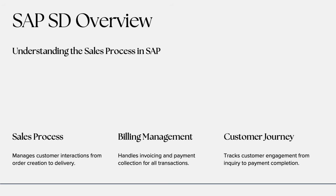Let's start with the basics. What exactly is SAP SD? SAP SD stands for Sales and Distribution. It's one of the core functional modules in SAP that handles everything related to selling products or services to customers.